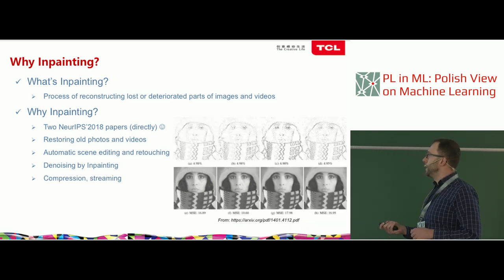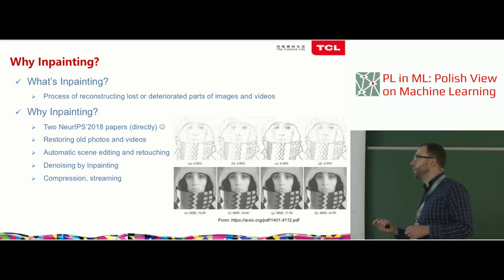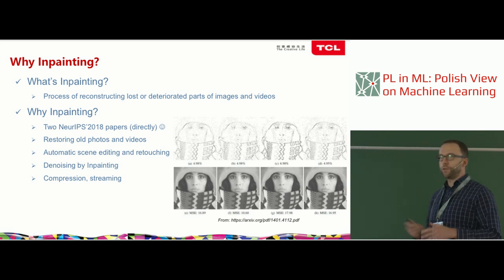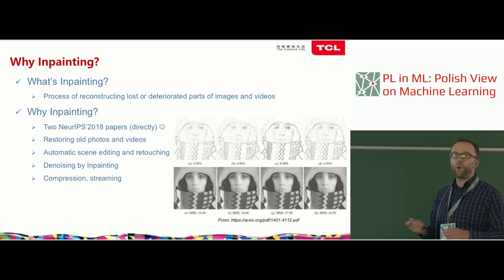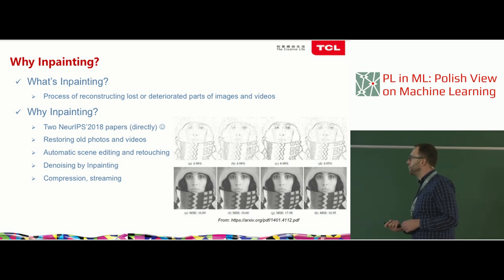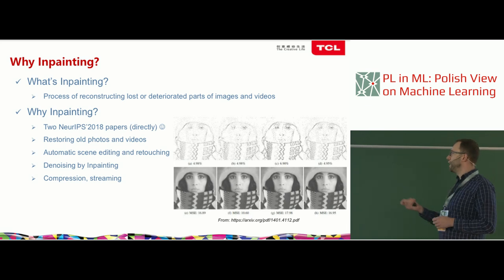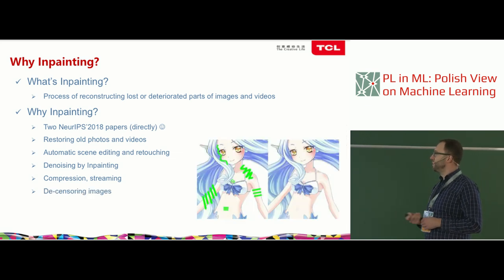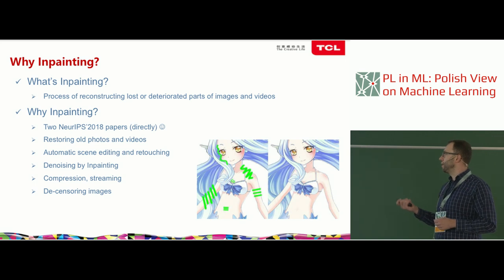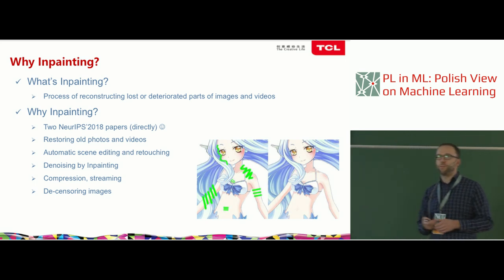I won't focus on denoising, but it can also be used for compression. From only 5% of pixels — if we choose those pixels in a smart way — we are able to reconstruct the whole image. And for entertainment, there was a recent model published which does uncensoring of images, in particular uncensoring of Japanese animations, revealing interesting details out of censored images.